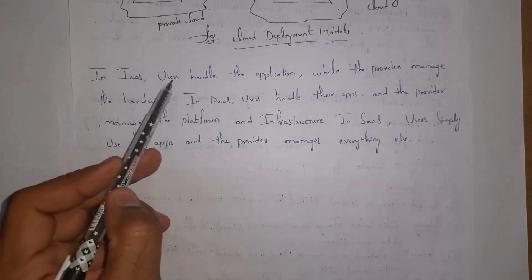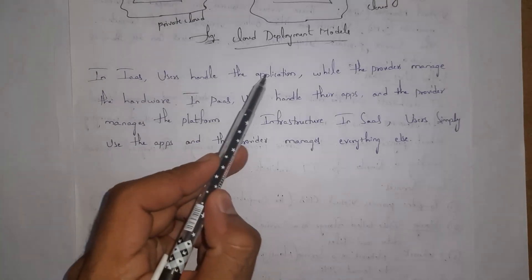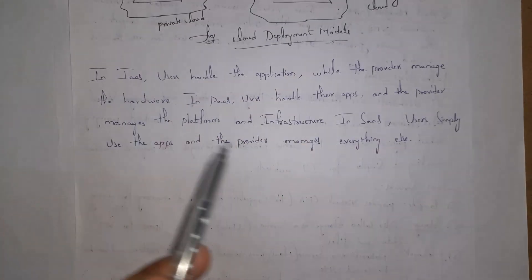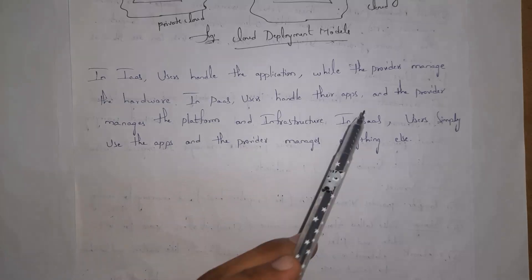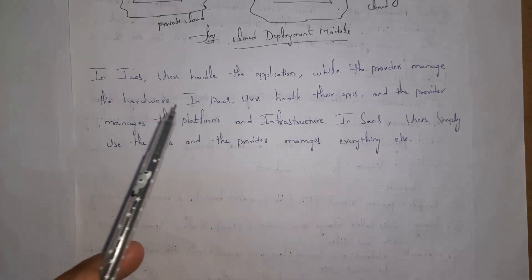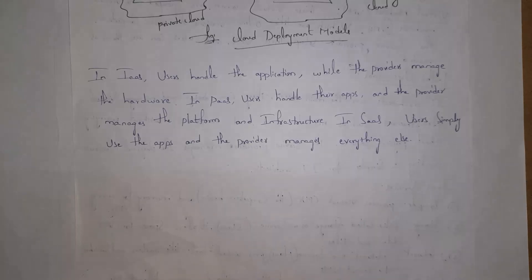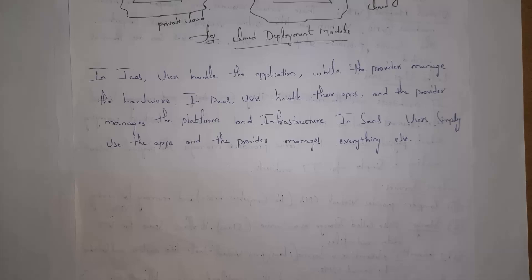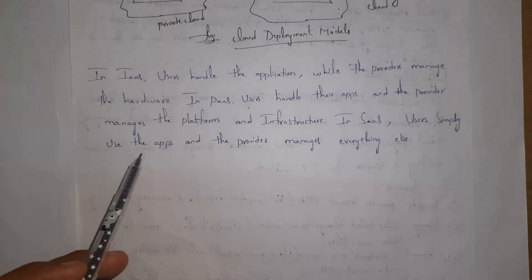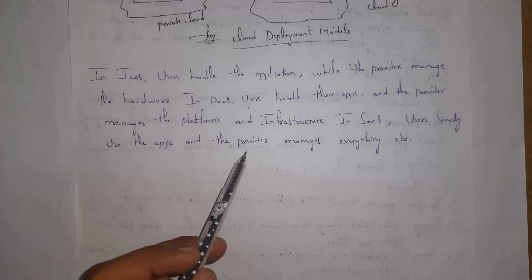In IaaS, users handle the application while providers manage the hardware. In PaaS, users handle their apps and providers manage the platform and infrastructure — providers give only the software tools required for software development, not complete software. In SaaS, users simply use the software and providers manage everything.